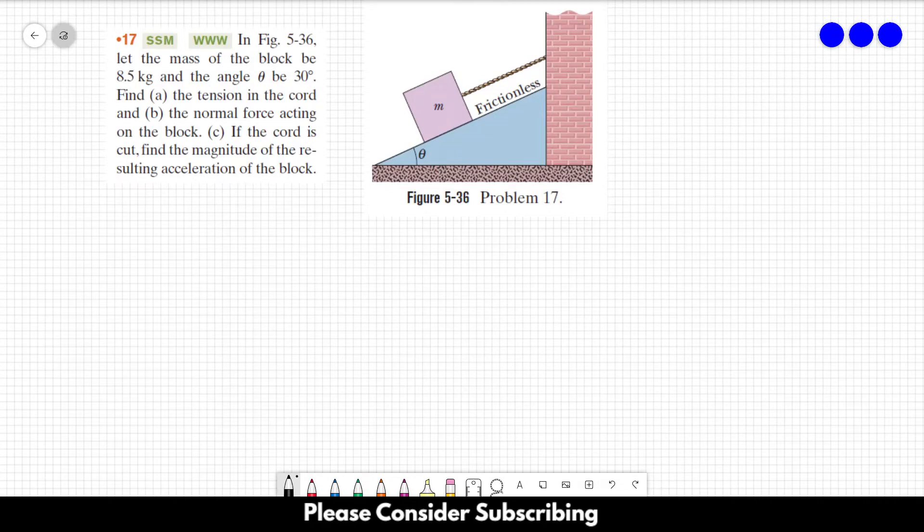Number 17. In this figure, let the mass of the block be 8.5 kilograms, so let's write it down: m = 8.5 kg, the angle is 30 degrees. Find (a) the tension in the cord, (b) the normal force acting on the block, and (c) if the cord is cut, find the magnitude of the resulting acceleration of the block.